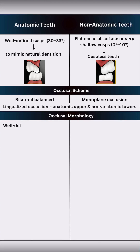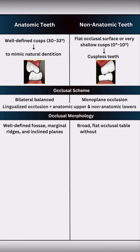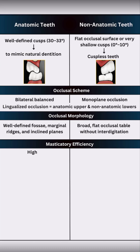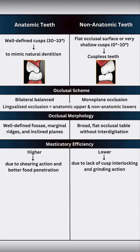Talking about occlusal morphology, anatomic teeth have distinct fossae, marginal ridges, and inclined planes. Non-anatomic teeth offer broad, flat occlusal tables without any cuspal interdigitation. Anatomic teeth offer higher masticatory efficiency because of the shearing action by cusp angles and better food penetration. Non-anatomic teeth have lower chewing efficiency because they lack cuspal interlocking.